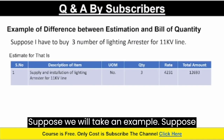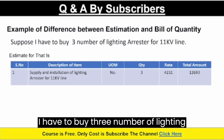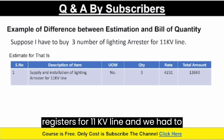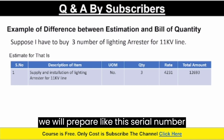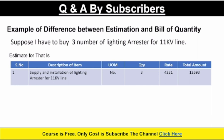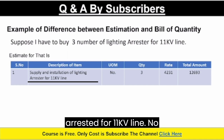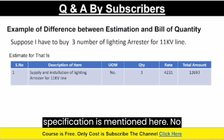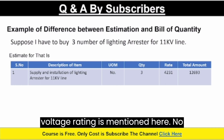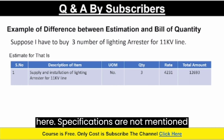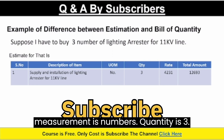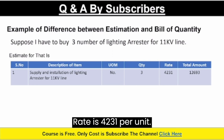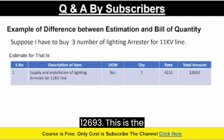Suppose we take an example. Suppose I have to buy 3 lighting arresters for an 11kV line and we have to prepare an estimate for that. Then we will prepare like this: Serial number 1, Description of Item — Supply and Installation of Lighting Arrester for 11kV line. No specification is mentioned here, no voltage rating, no current rating. Unit of Measurement is numbers, quantity is 3, rate is 4,231 per unit, total amount is 12,693. This is the format of an estimate.